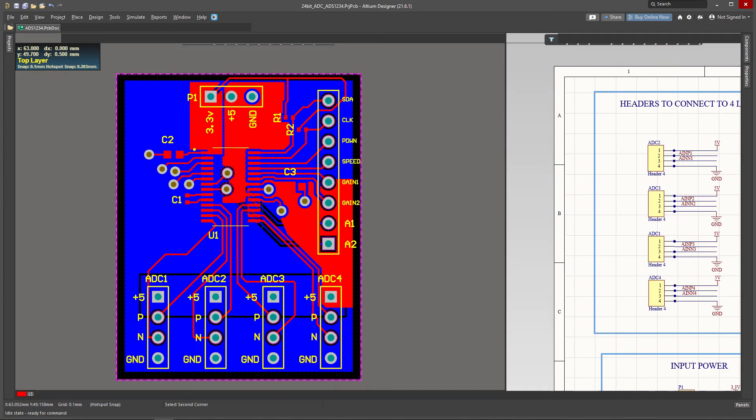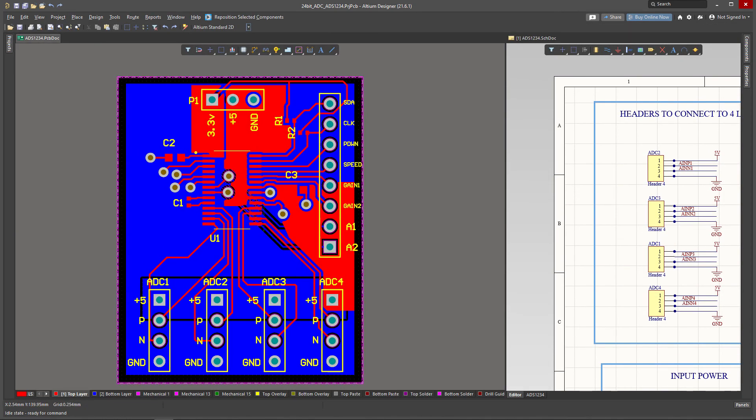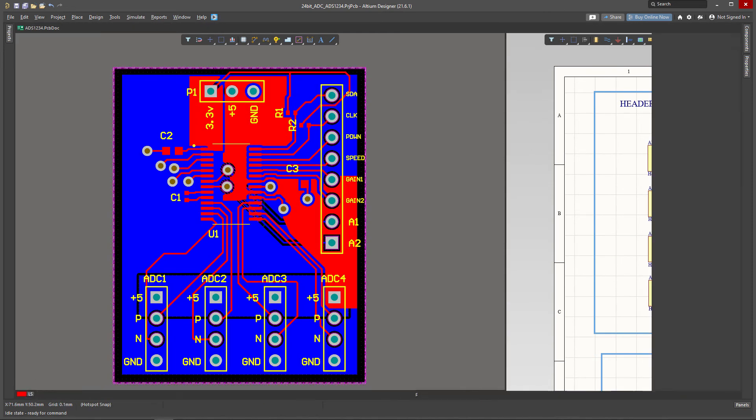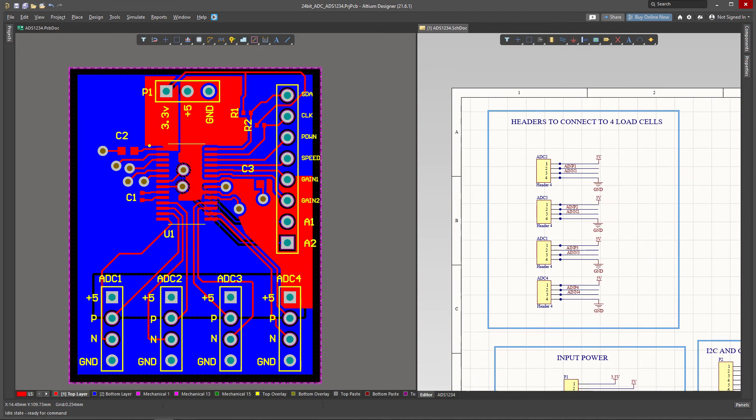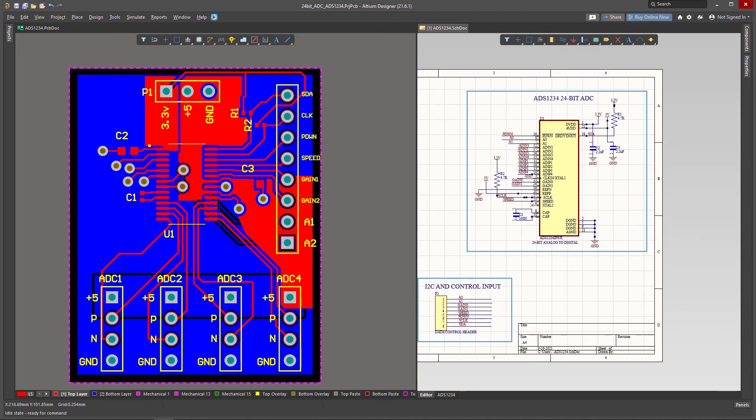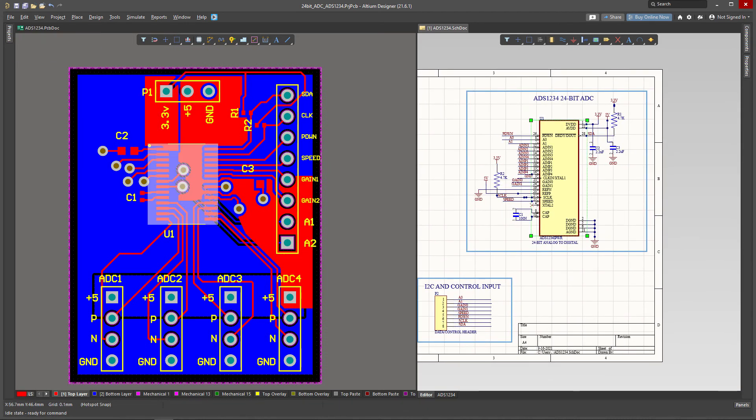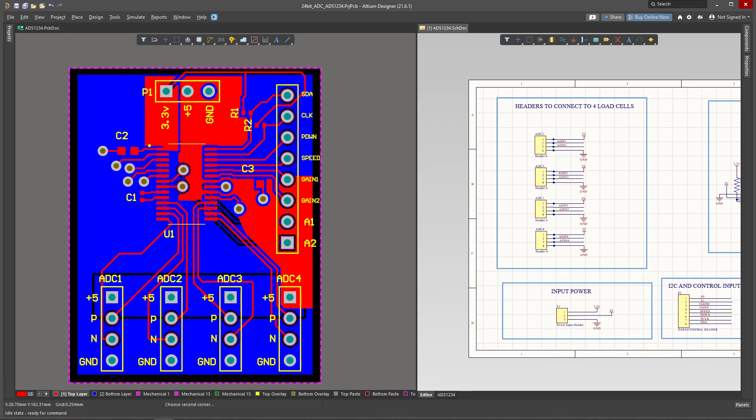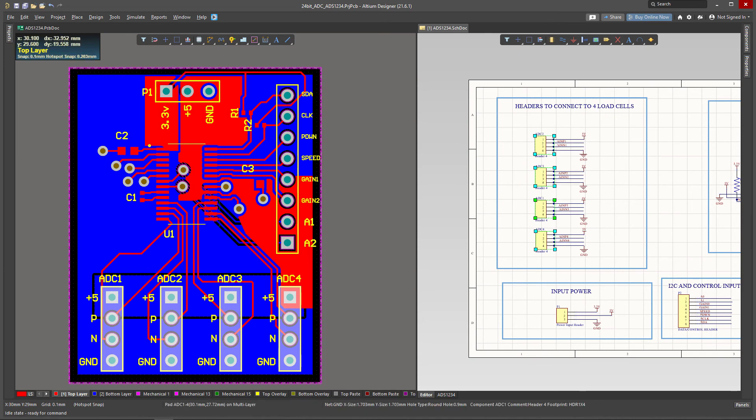What we have here is the main component which is in the center, and then you have all these four load cells which will be connected here. So we can connect all the load cells nicely to this board.